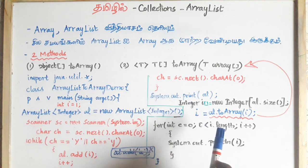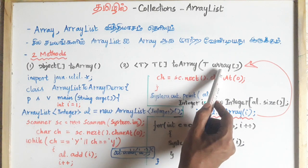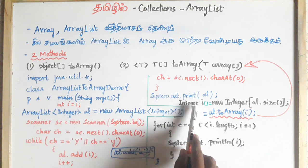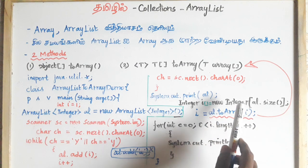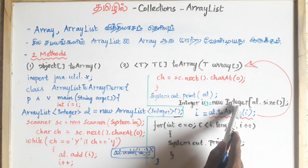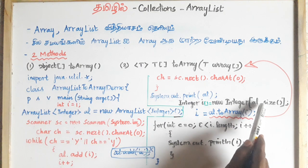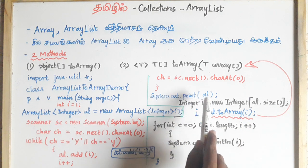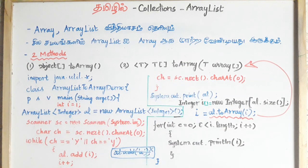Now we have an ArrayList that contains only integer values. Now we will create a new ArrayList — new Integer with a specified size. This is static memory, fixed memory. If we tell the size of the ArrayList, that is the fixed size for the Integer ArrayList.